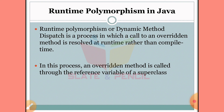In runtime polymorphism, we use the reference variable of the parent class. The object is created in the child class, while the reference belongs to the parent class. This is how parent and child class relationships work in polymorphism.